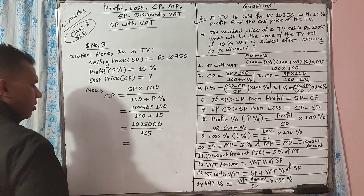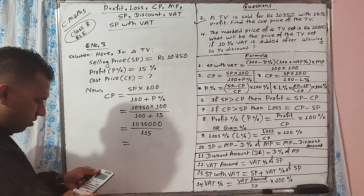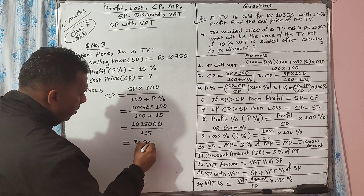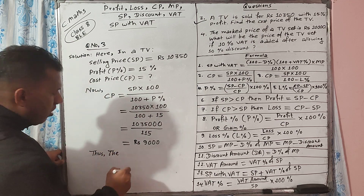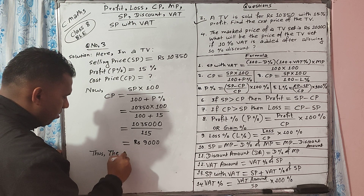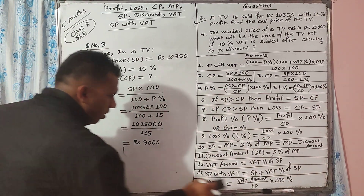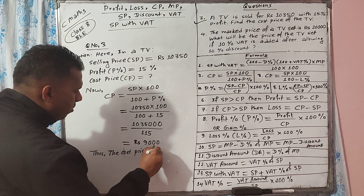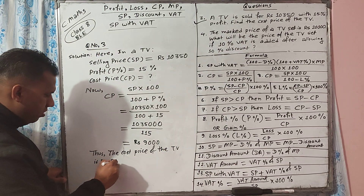Now, by using a calculator: 1,035,000 divided by 115. It becomes 9,000. Thus, the cost price of the TV is rupees 9,000.